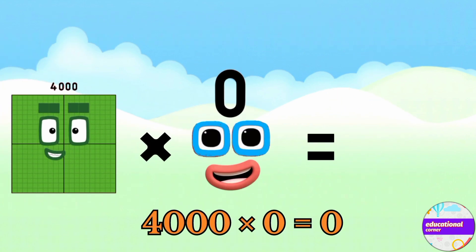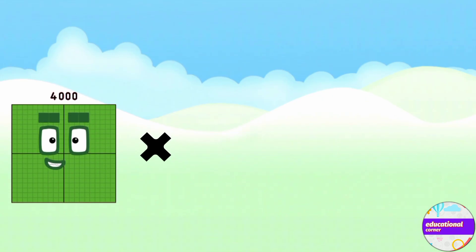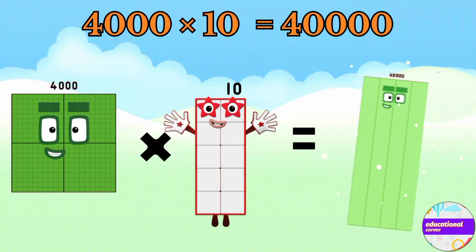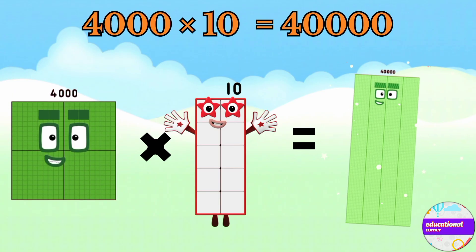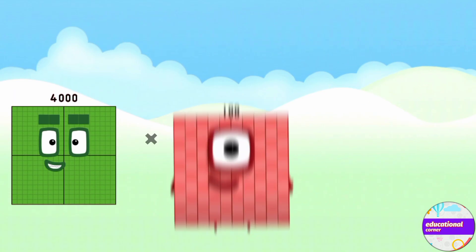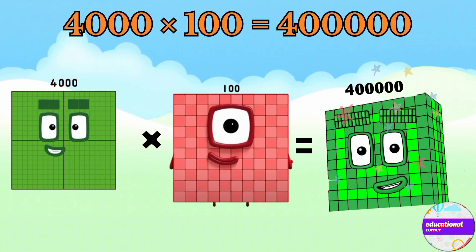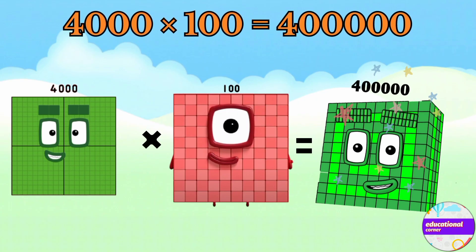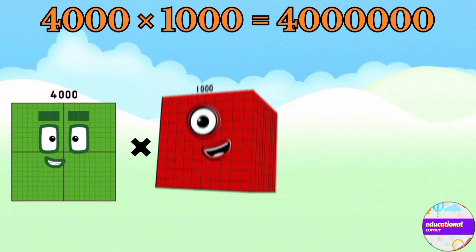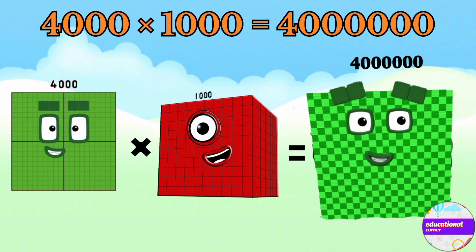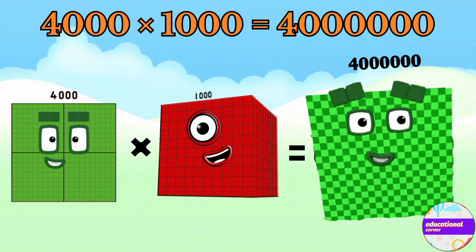Four thousand multiply by ten equals forty thousand. Four thousand multiply by hundred equals four hundred thousand. Four thousand multiply by thousand equals four million.